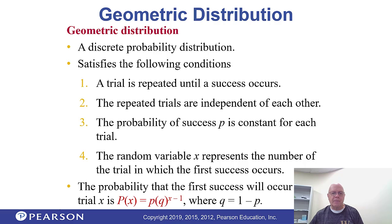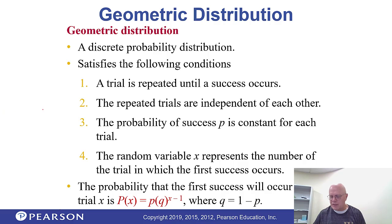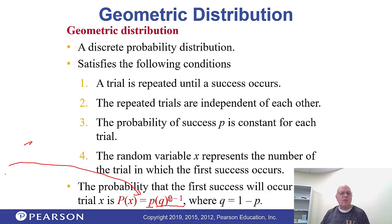Here's a picture of what the probability looks like. If you look at this part, remember this is when we got the first success, so x minus 1 were failures, and then you had the success. Q represents the probability of a failure — all familiar territory, I hope.